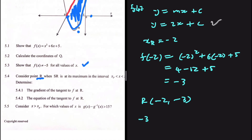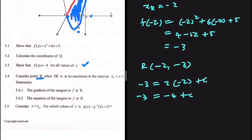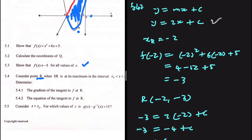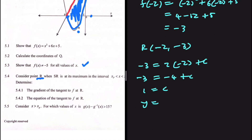Substituting r into y equals 2x plus c: minus 3 equals 2 times minus 2 plus c, so minus 3 equals minus 4 plus c, giving c equals 1. Therefore the equation of the tangent to f at r is y equals 2x plus 1.